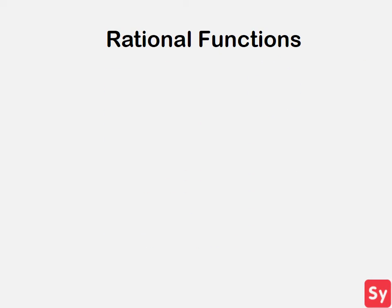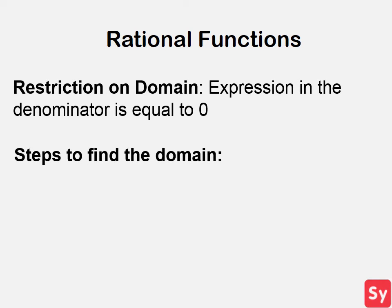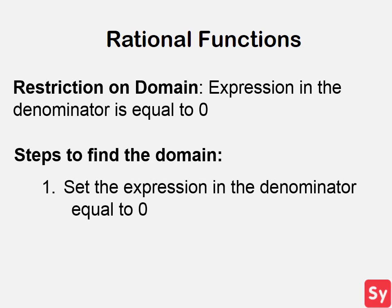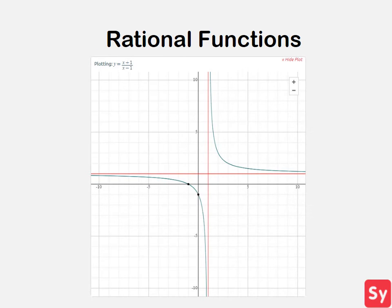Next we will talk about rational functions. Rational functions are undefined when their denominator equals zero — this is the restriction on the domain. In order to find the domain of rational functions, first set the expression in the denominator equal to zero. Next, solve for x to see what value or values is not in the domain. Here is the graph of the rational function x plus 1 over x minus 1. We can see that the domain is undefined when x equals 1.